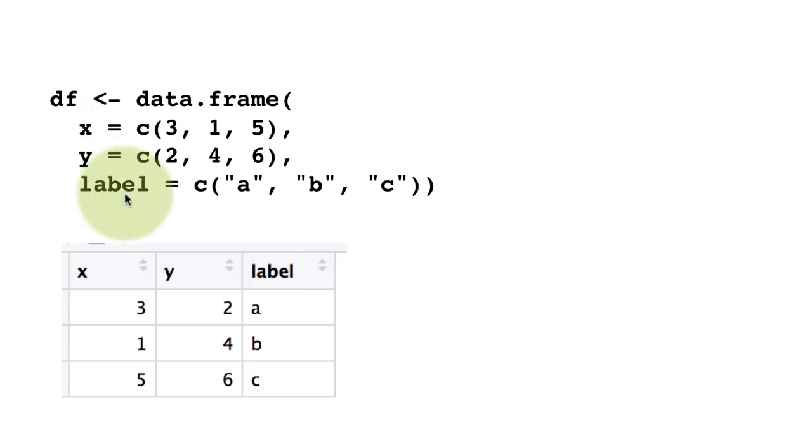You can create data frames in code and this is how you do it. The first column is X, so we say X equals c(3, 1, 5), and then Y is c(2, 4, 6), and the label is the three strings A, B, and C. When you create a data frame using the data.frame function, you specify the column names and the values in each of the columns. This is a little non-intuitive. Normally we like to look at data frames as rows, and there's another way to create a data frame using a different syntax. We'll look at that later. For now we'll stick with this.